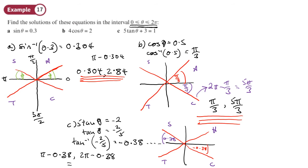We need to change them to positives. So π minus the answer gives 2.76 as one solution. And for the other solution, 2π minus tan inverse of negative 2/5 gives 5.90. So our answers to three significant figures are 2.76 and 5.90.